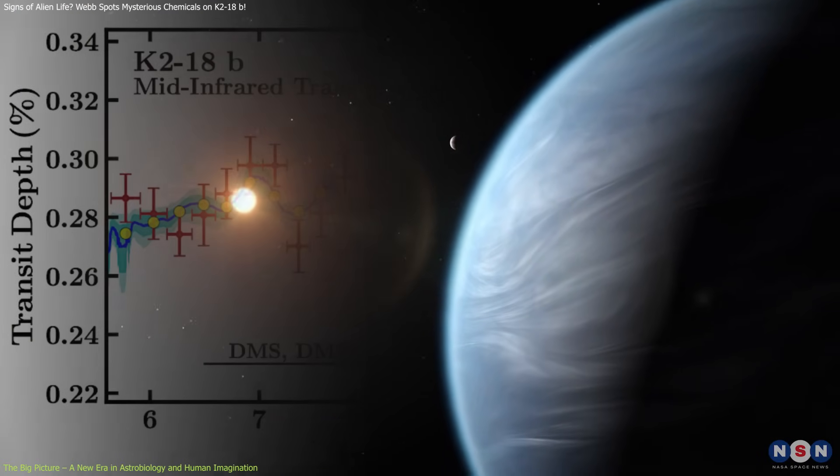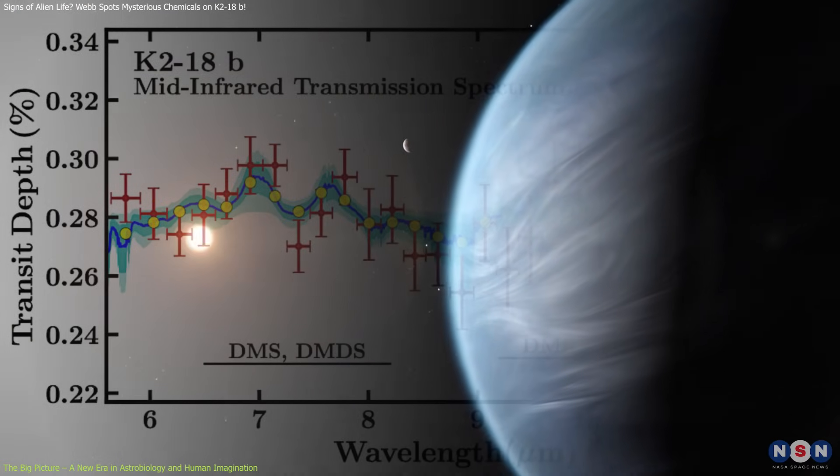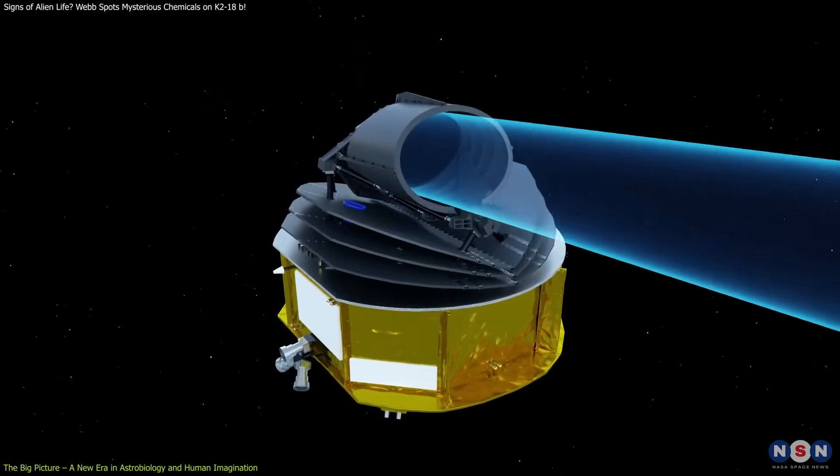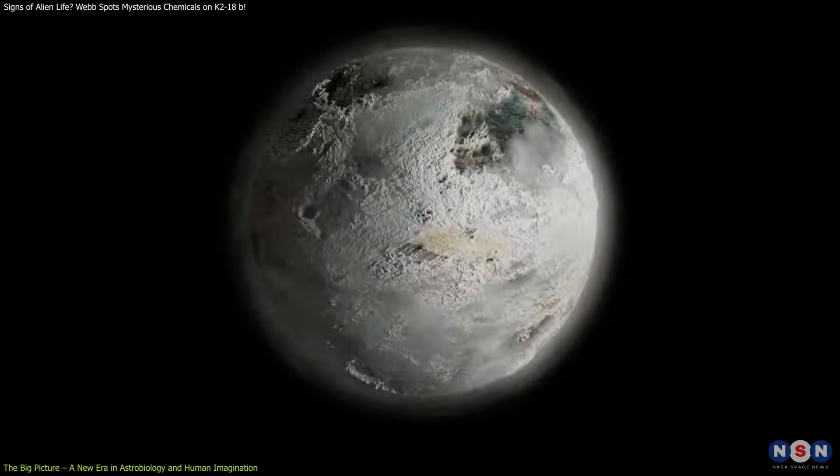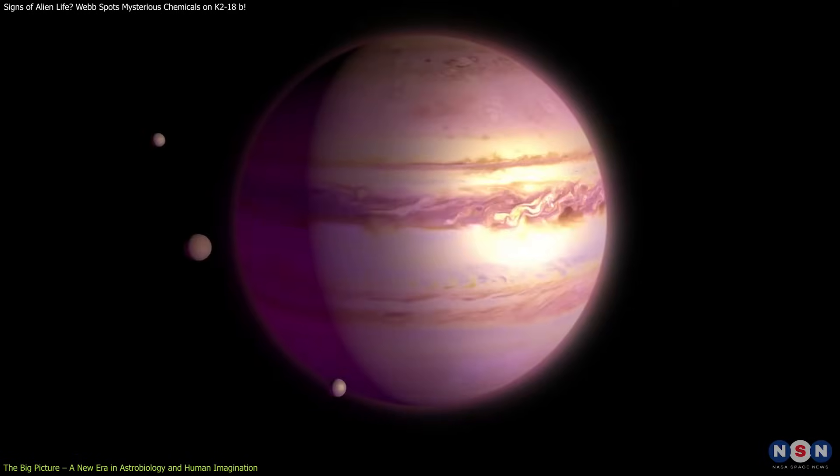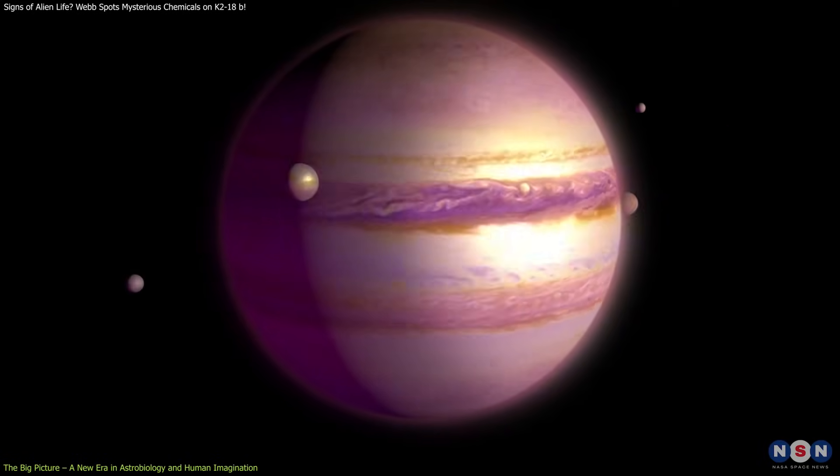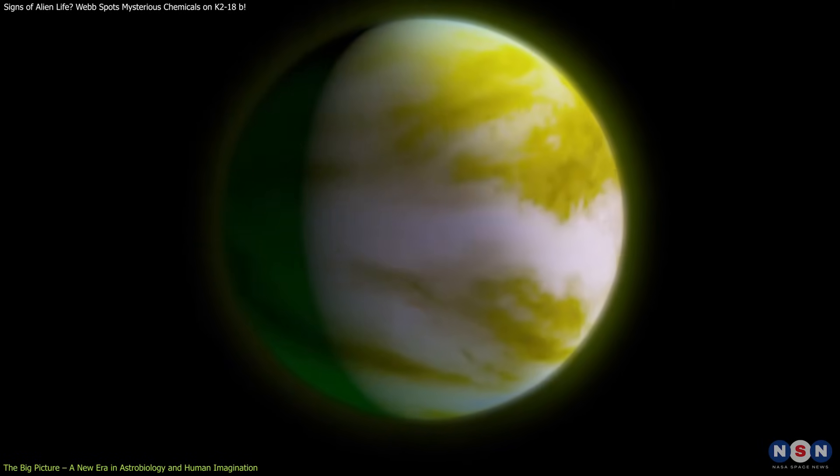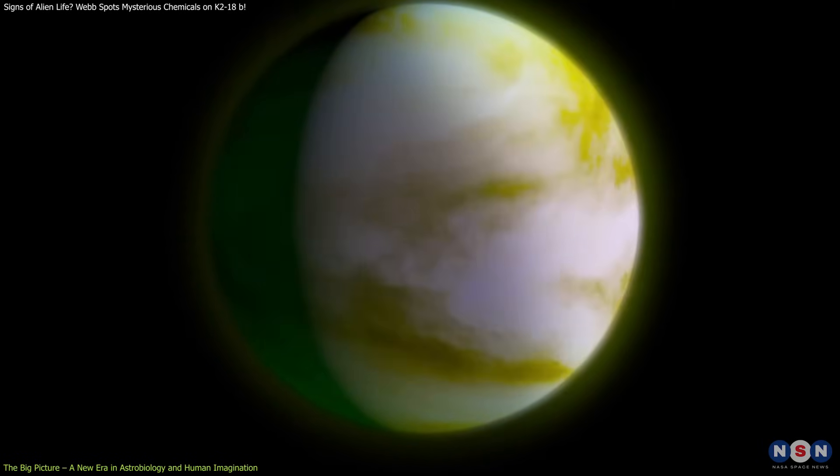Looking ahead, the detection on K218b is only the beginning. The European Space Agency's Ariel mission, launching in 2029, will examine hundreds of exoplanet atmospheres, many of them Haitian. It will provide deeper insights into planetary climates, compositions, and potential biosignatures.